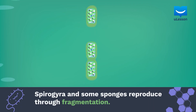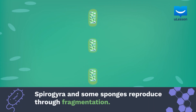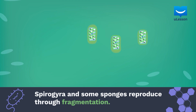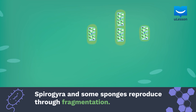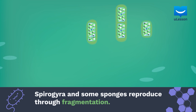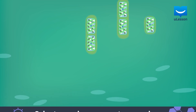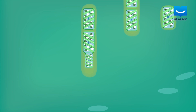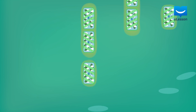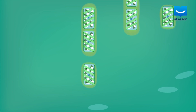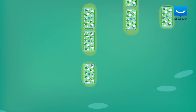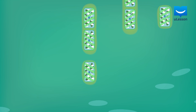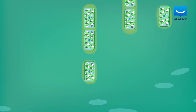Organisms like Spirogyra and some sponges can reproduce through fragmentation. Long filaments of Spirogyra can break off into shorter fragments that can grow to become new filaments.